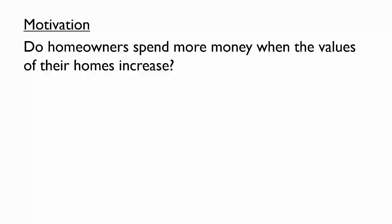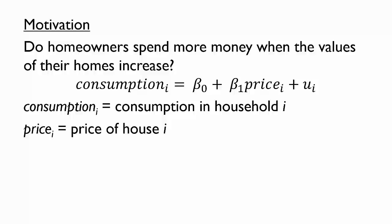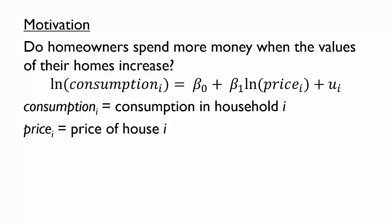A simple answer would be to find the relationship between consumption and house price. Analyses of this question have used econometric models similar to this one, although they are often more complex. It is common to use a double log model, perhaps due to the many outliers of consumption and house prices. This also lets us interpret the coefficient as an elasticity.